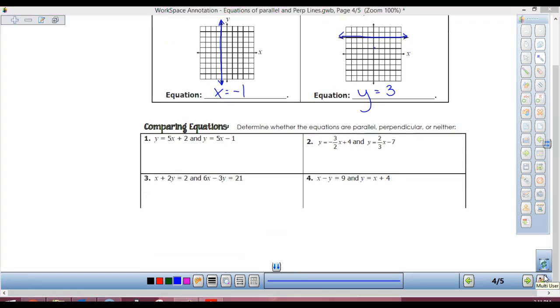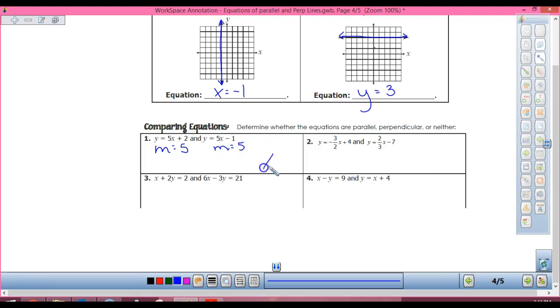Horizontal lines are y equals a number. What's my slope? Zero. Slope is zero. So my equation is y equals zero.